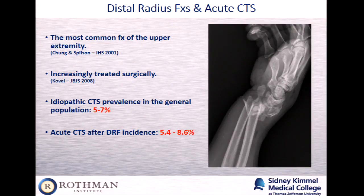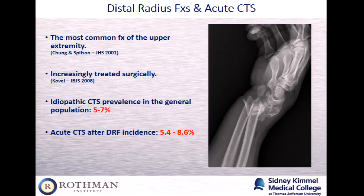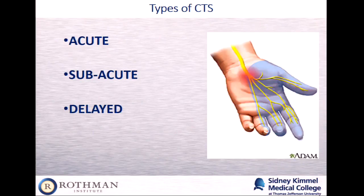The most common type is idiopathic carpal tunnel syndrome — I use the analogy of idiopathic hypertension. It's the type you get without a specific identifiable cause, in contrast to secondary carpal tunnel syndrome, which is what we're going to focus on today. Idiopathic CTS has a prevalence of about 5% to 7%. Carpal tunnel syndrome as a product of a distal radius fracture has been quoted to be as high as 5% to 9%. When we talk about CTS related to a distal radius fracture, we can divide it into three categories: acute, subacute, and delayed.